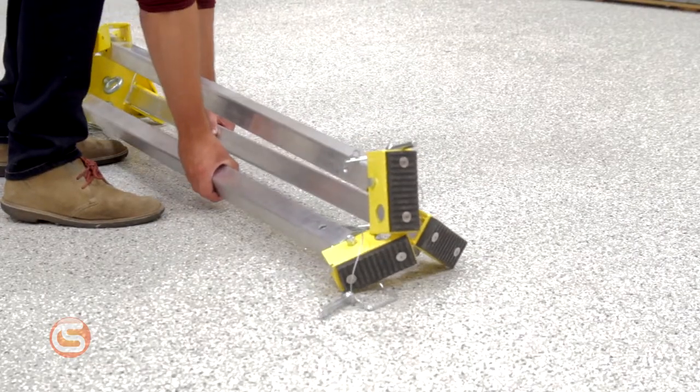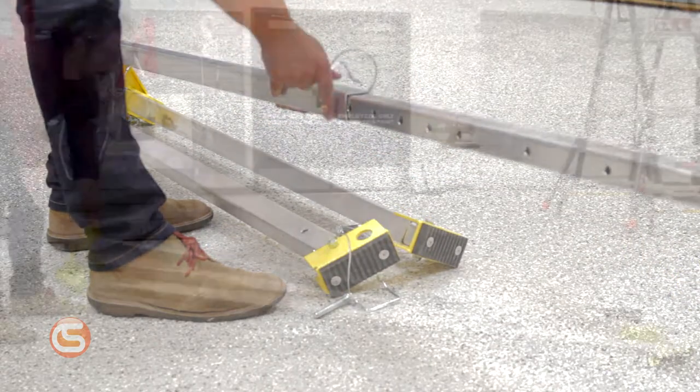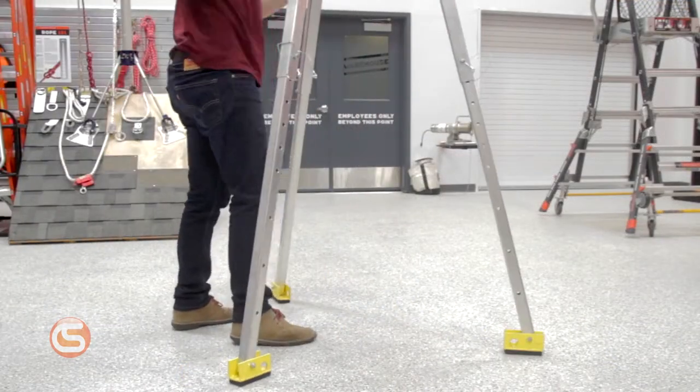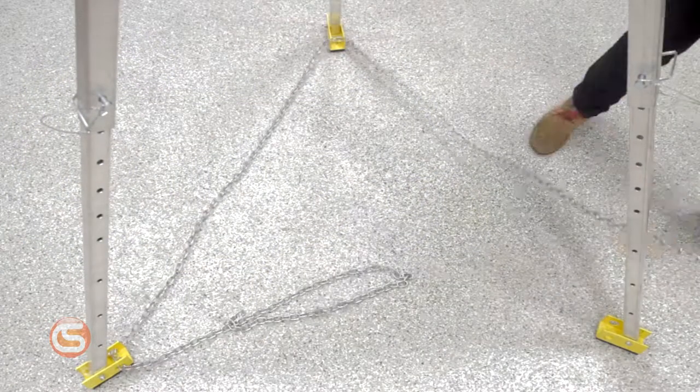First lay the tripod flat on the ground. Extend each leg to the desired length and insert the pins to secure the legs. Then stand the tripod up into vertical position. Insert the pins to secure the legs of the tripod head and attach safety chains to each leg.